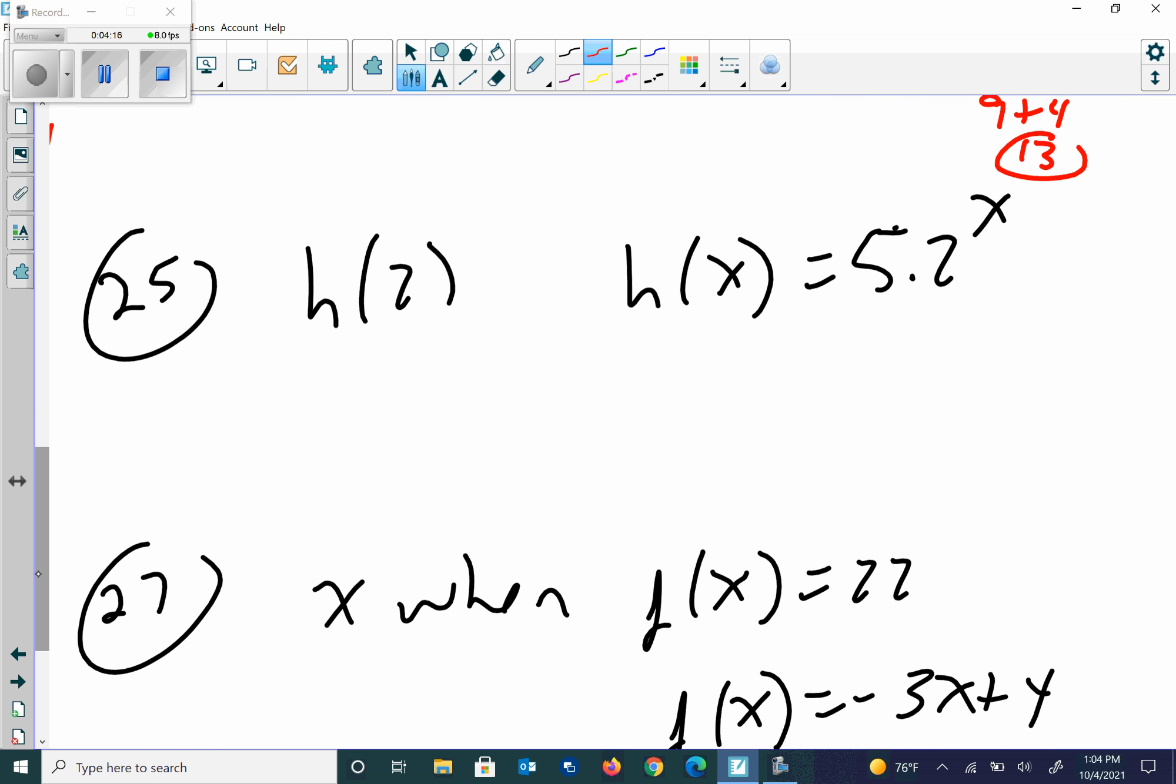Number 25, we're going to use our h equation. So I have 5 times 2 to the second. Order of operations says take care of the exponents first. So 2 to the second is 4 because 2 times 2 is 4. 5 times 4 is 20.